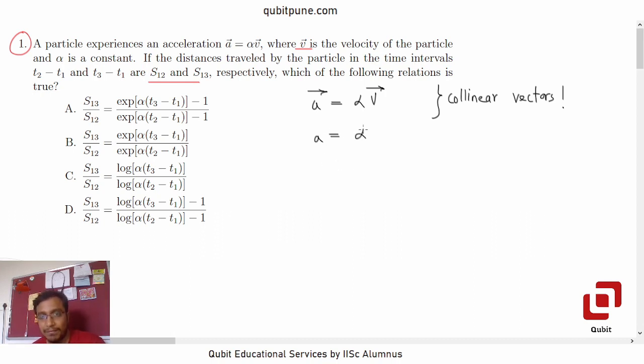So a is equal to alpha v. This is still a vector equation, but we know that because their directions are always going to be the same, we are representing it without the vector notation. Now, because we want the distance, let us first use the derivative form. So a is dv by dt equal to alpha v.